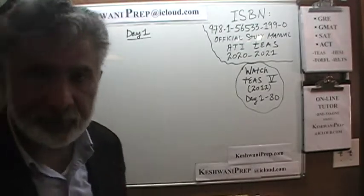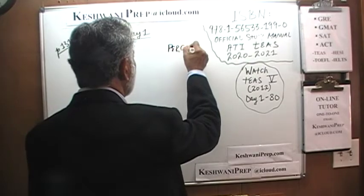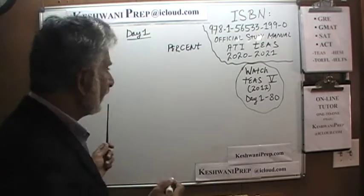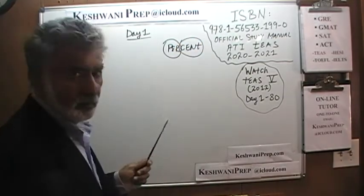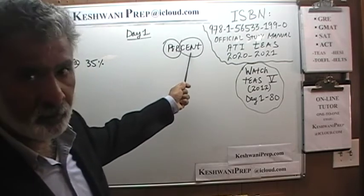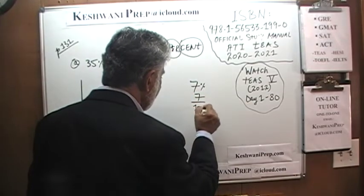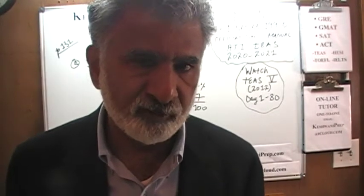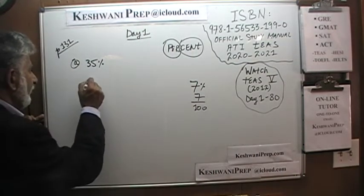Whenever we are asked to convert any percentage into a fraction or decimal, the key concept is: what does the word 'percent' literally mean? It means per 100. 'Cent' is where the English word 'century' comes from — per 100. So 7% means 7 over 100, 33% means 33 over 100, 25.8% means 25.8 over 100. Here, 35% simply means 35 over 100.